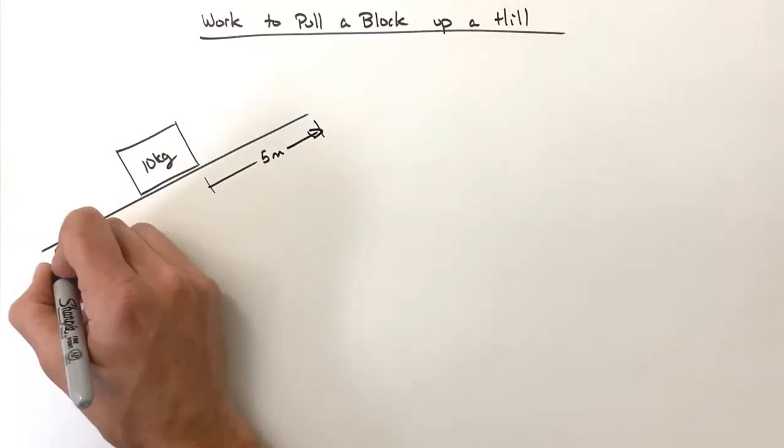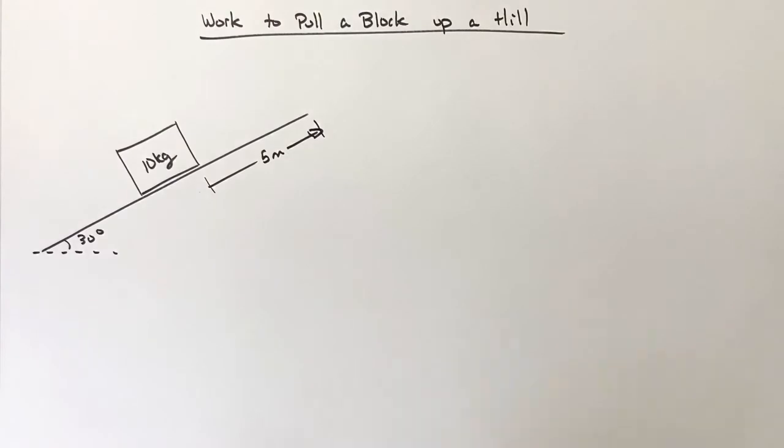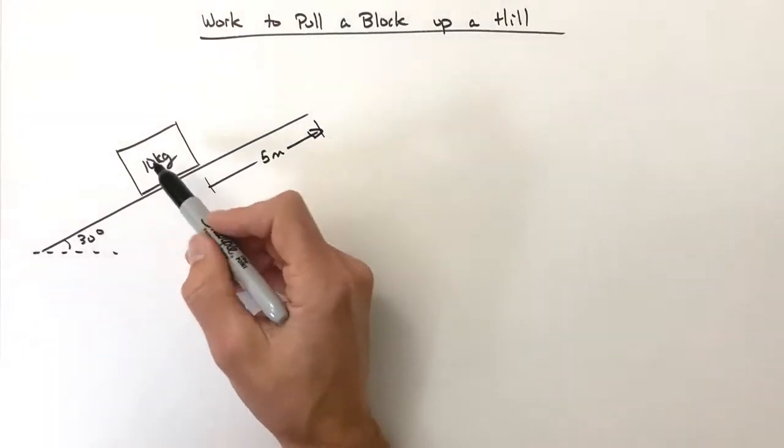This hill is tilted at 30 degrees above the horizontal. We're going to solve for the total work done by all the forces acting on this block.